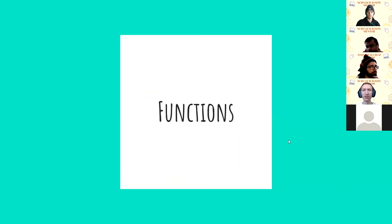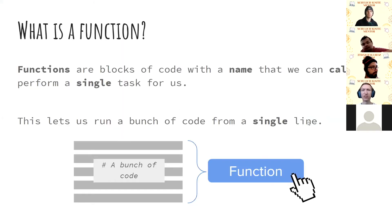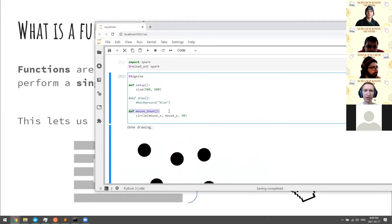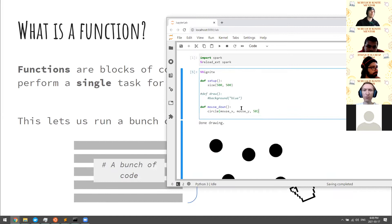We're not going to spend too long on mouse input — that's just another way of handling it. Remember the other way was checking the mouse_is_pressed variable, which works just as well. Now we're going to talk about functions. We've already shown a few different functions that we've defined: def setup, def draw, and def mouse_down — these are all function definitions, so we're creating these new functions.